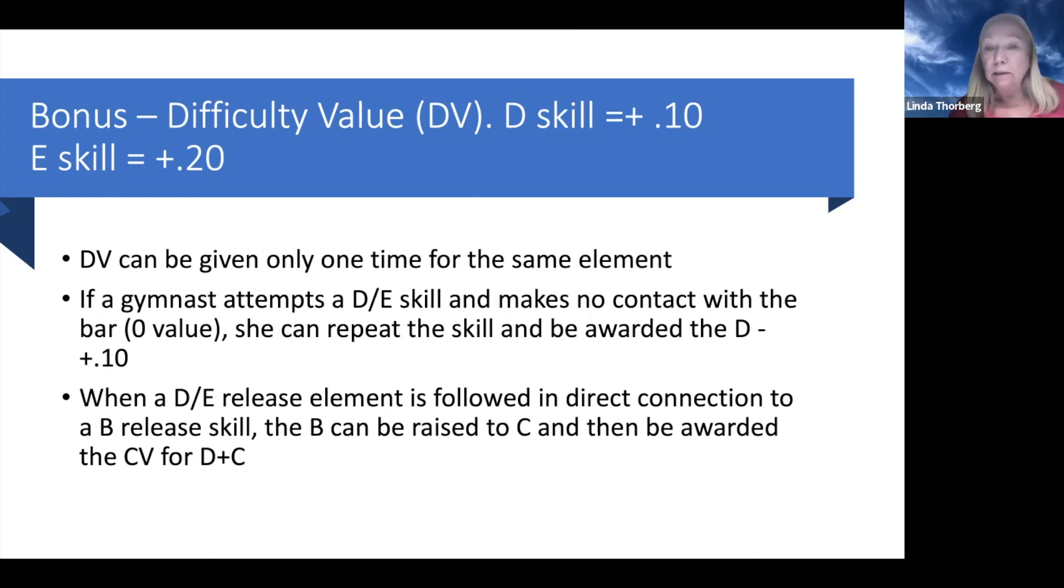When a D or E release element is followed in direct connection to a B release skill, the B can be raised to a C, and then be awarded the connective value of D plus C, and get that plus one. So an example would be when they do a release on the high bar like a Ginger, and then out of the Ginger, they do an overshoot, which is really just a B bail over the low bar, then that B raises to C. And because she did it out of a D release, and the D release did come from a handstand originally, then she would be able to get the D plus C, and then get that D credit and the plus one.